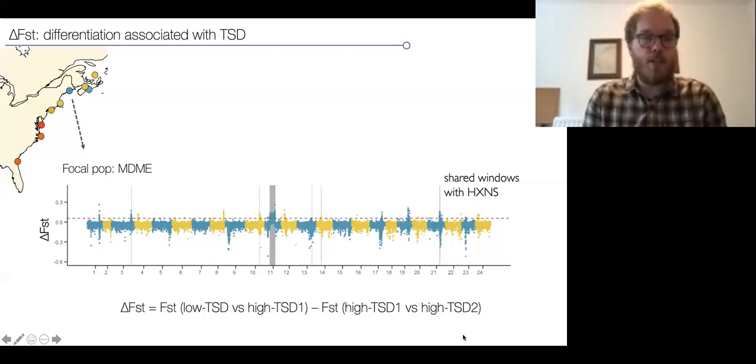We focused on populations that show low levels of temperature-dependent sex determination, for example one here, MDME, which is in the Gulf of Maine, and shows the lowest level of temperature-dependent sex determination. We calculated statistics called delta FST, which is just the FST between this population with low TSD and the neighboring population with higher TSD, and subtracting the background divergence between two neighboring populations with high levels of TSD. Basically corrects some of the background divergence, and we can see that many of the regions that were initially associated with temperature-dependent sex determination in the GWAS also show strong differentiation, including the region on chromosome 11.